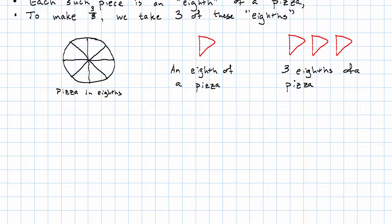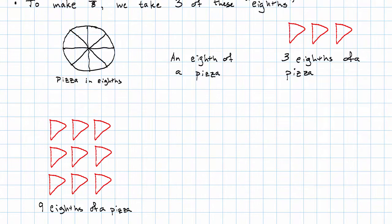We could also have lots and lots of eighths. We could have 9 eighths of our pizza, for example. Here we would write the fraction 3 eighths, and here we would write the fraction 9 eighths. An eighth of a pizza is a thing. We can have whatever number of them we want to.